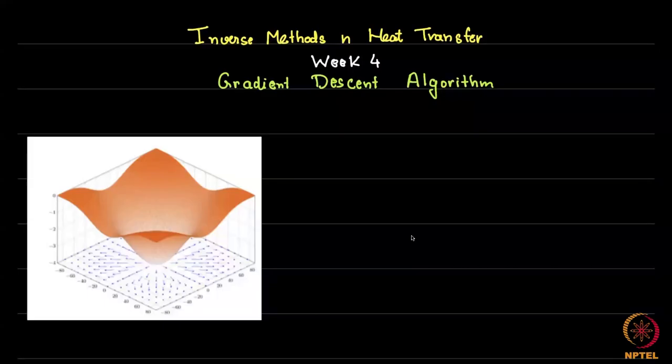Welcome back. This is week 4 of inverse methods in heat transfer. We are going to discuss an important algorithm. This is not directly in inverse methods, but it is a very important algorithm currently within machine learning. Gradient descent is an optimization algorithm.